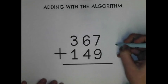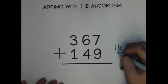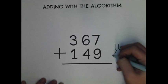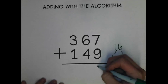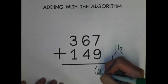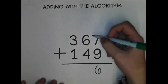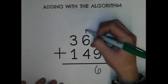So what I'm going to do is sixteen is really one group of ten and then six ones. So I'm going to put my six down here to show my six ones. And I'm going to bring my extra group of ten up here to add in with my other ten.